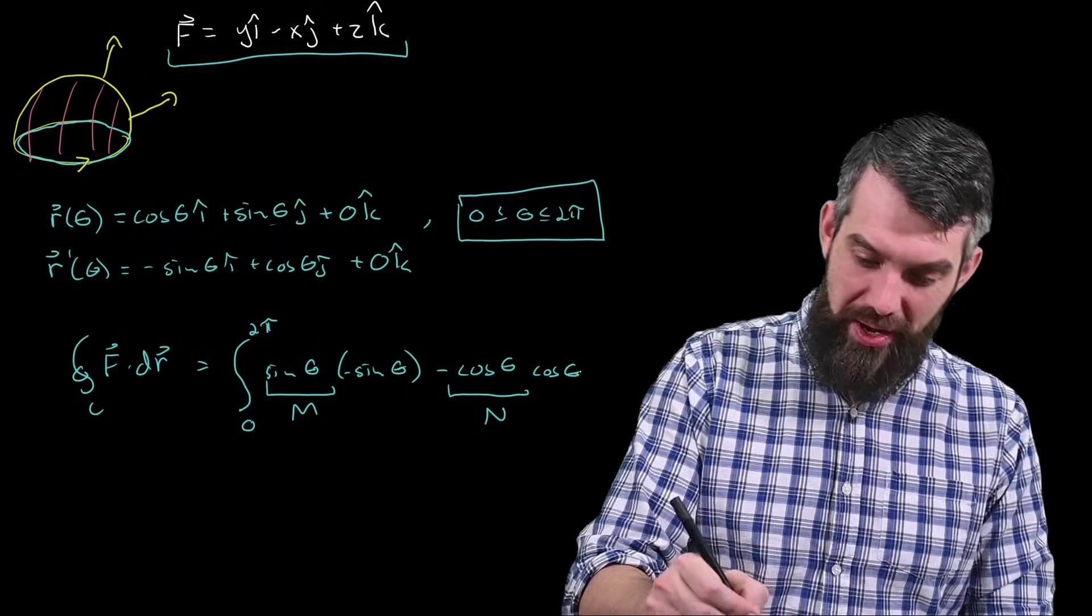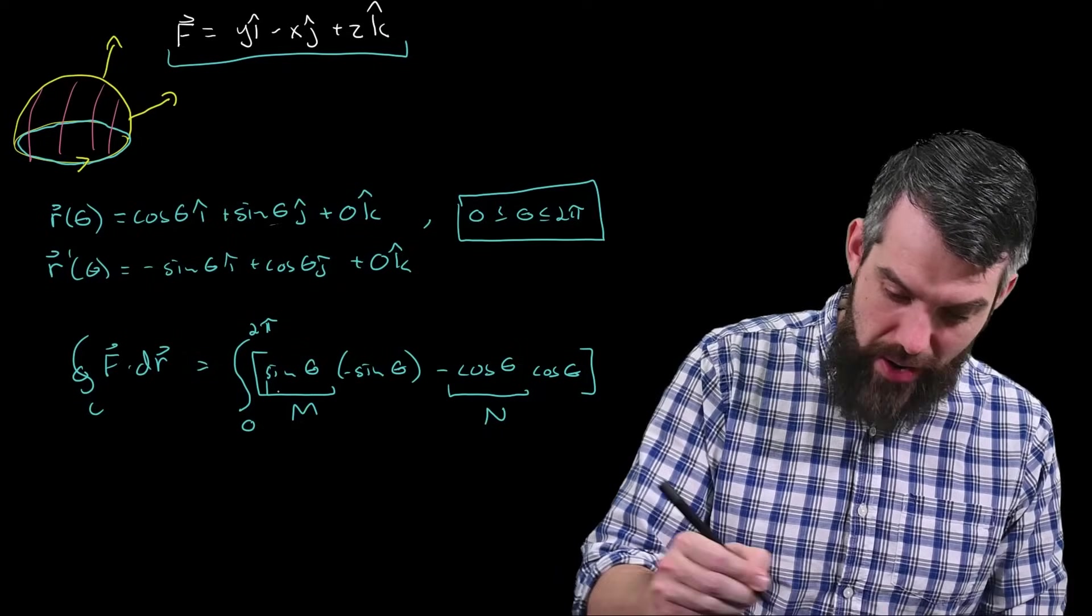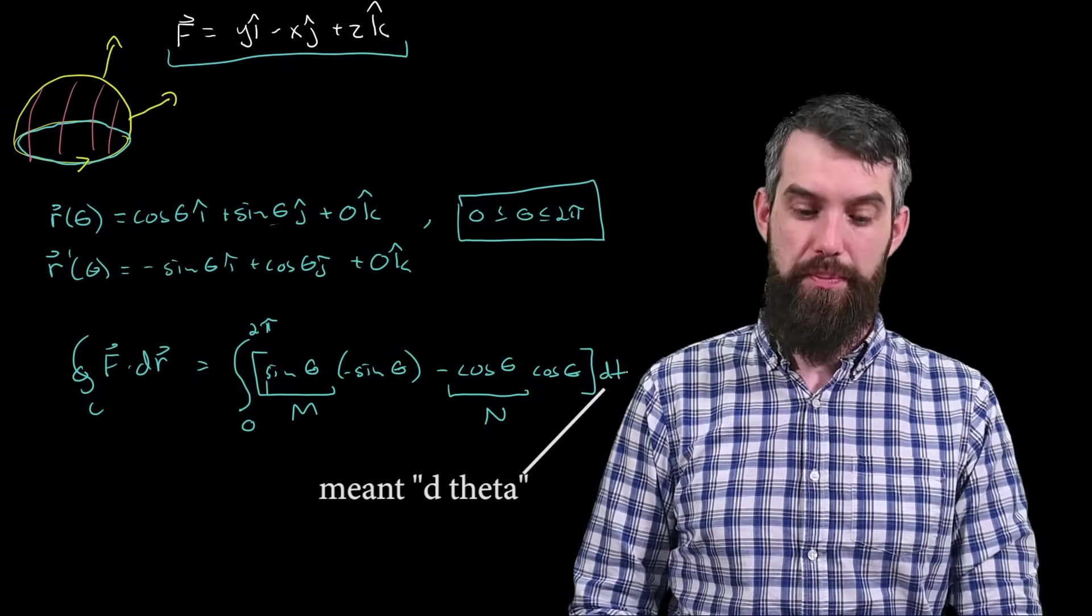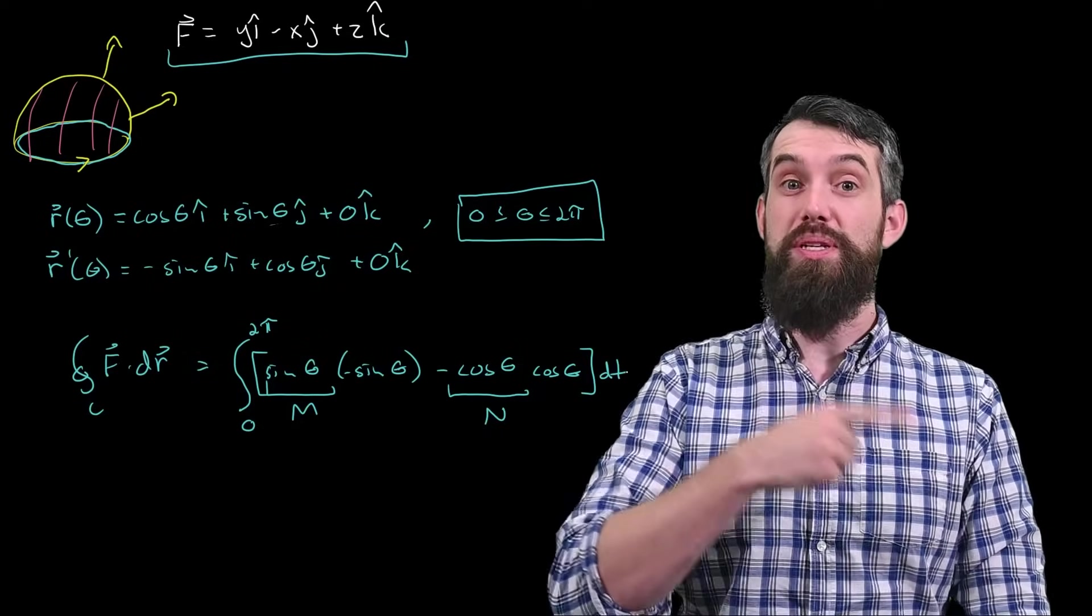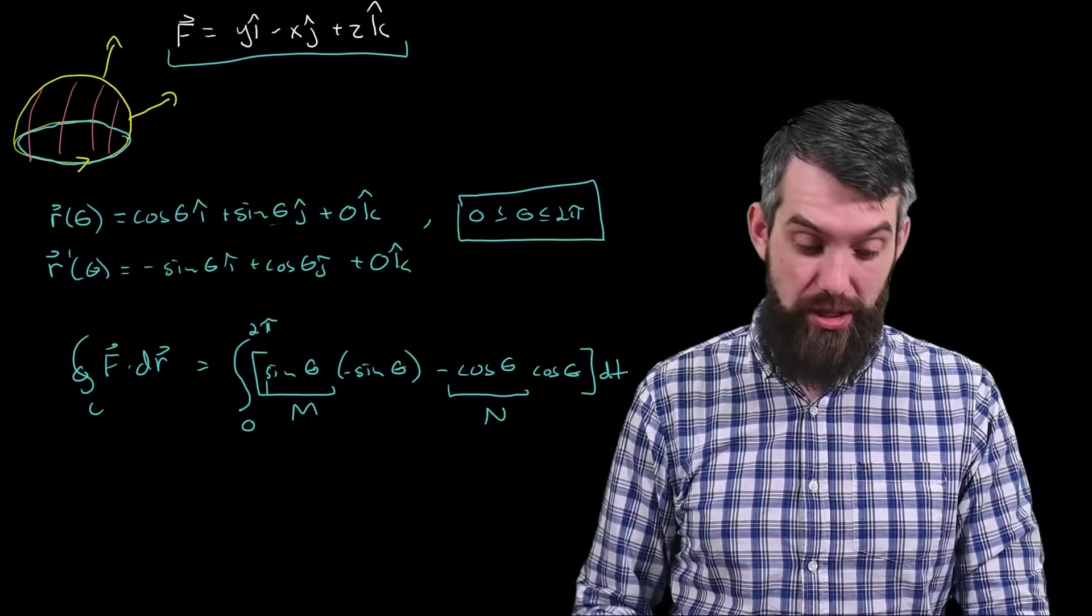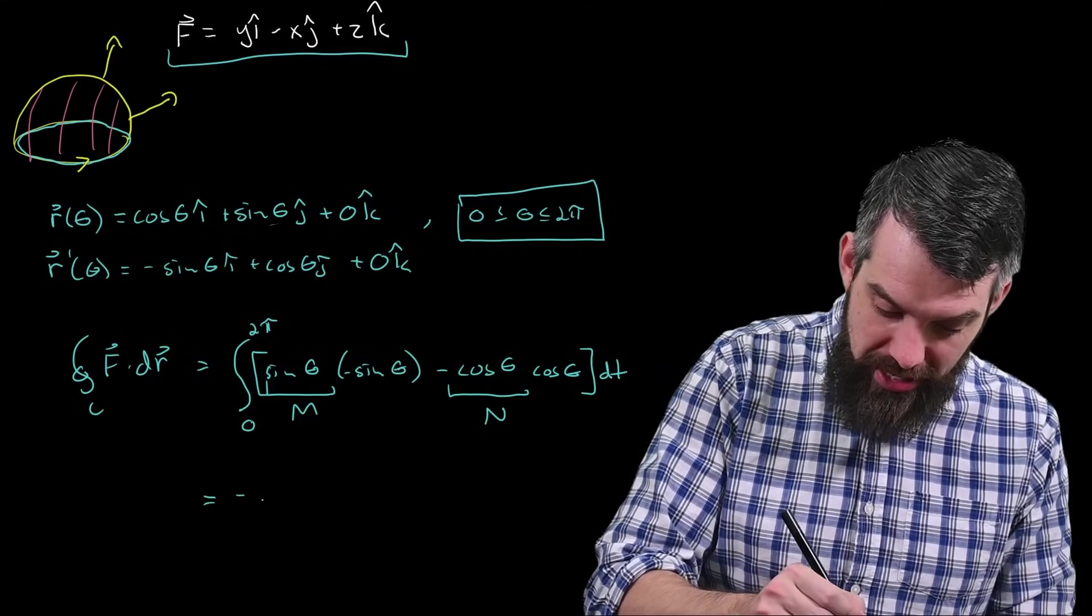And then plus 0, because the r-prime has 0 in the k-hat, so I'll just come there and put in my dt. Minus sine squared plus minus cosine squared is just minus 1, and so this is going to be minus 2pi.